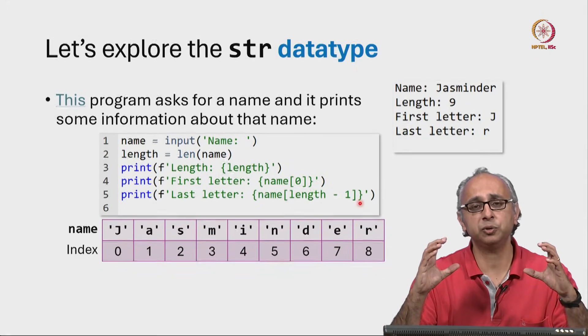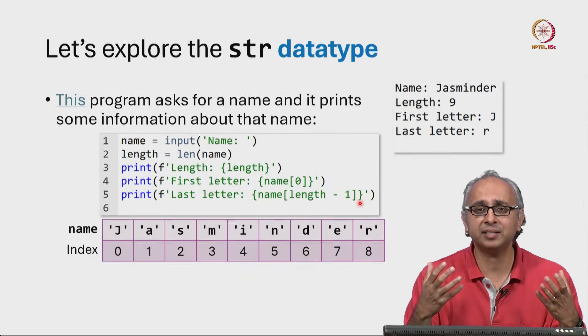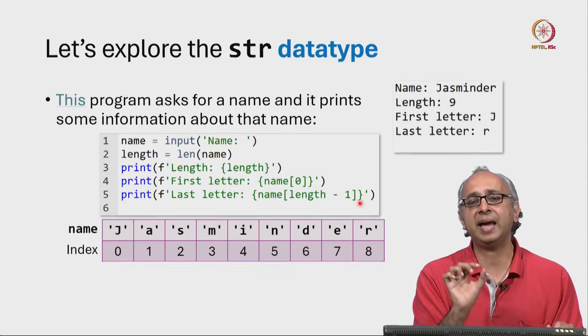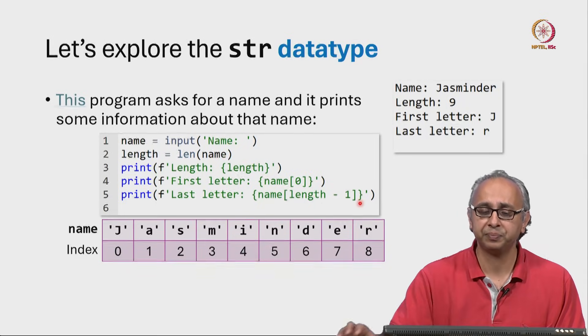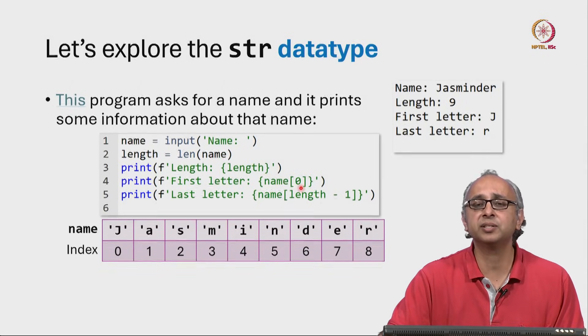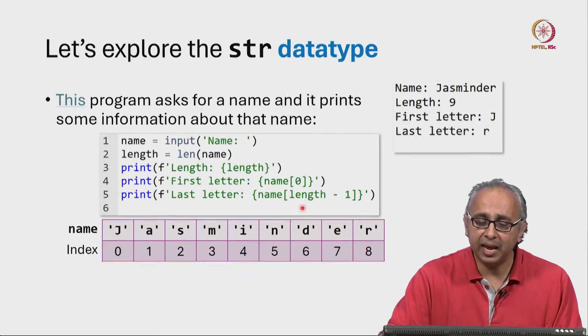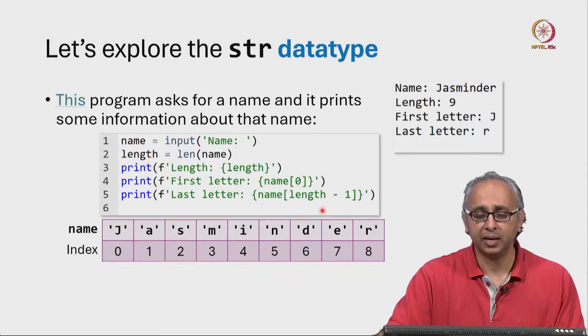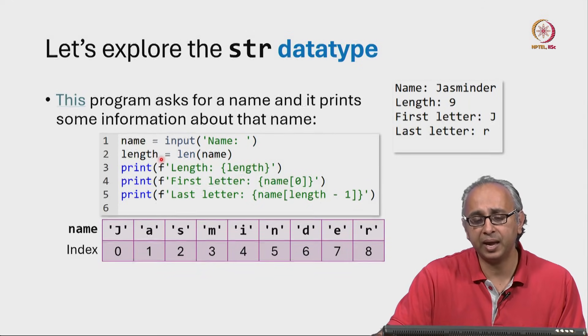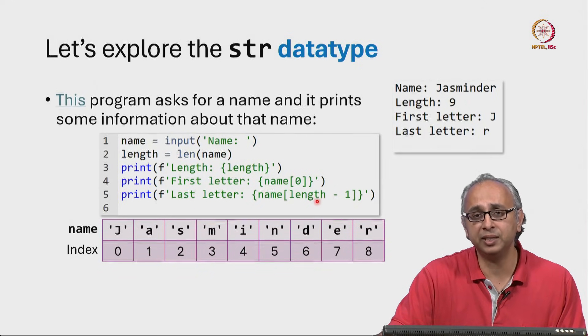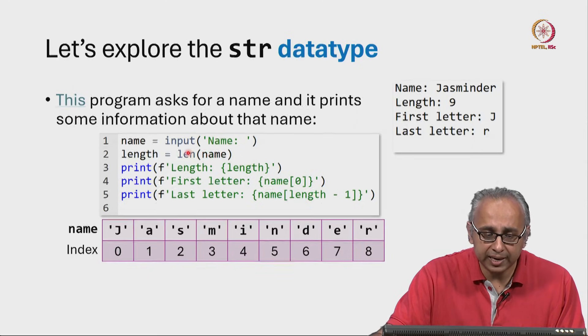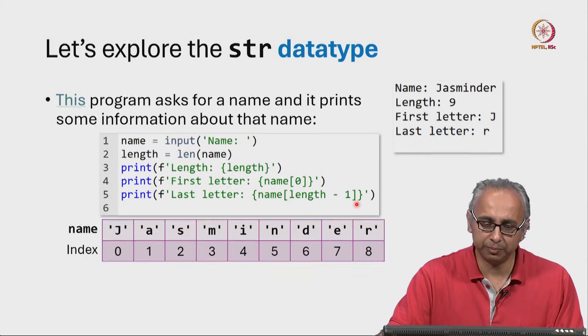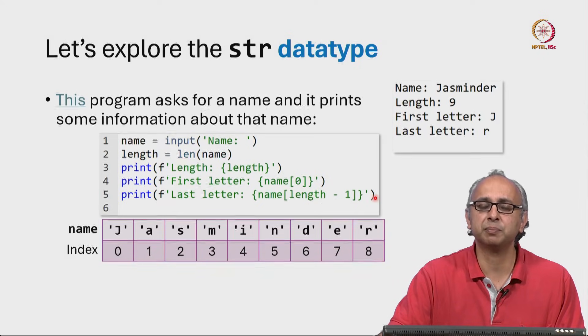So this square bracket notation, something we haven't yet seen, allows us to index or peer into the string at any given letter. We say name square bracket 0 when we want the first letter and name square bracket length minus 1 for the last. Here I have calculated the length in a variable and use that value in this expression. I could have just said len of name minus 1 directly, but this way the code is more readable.